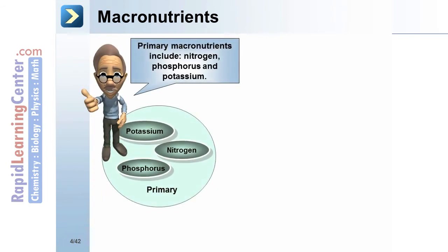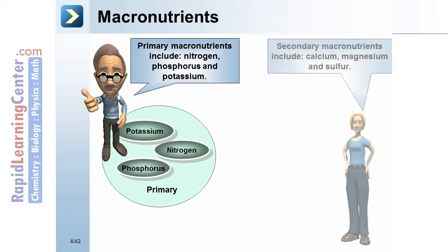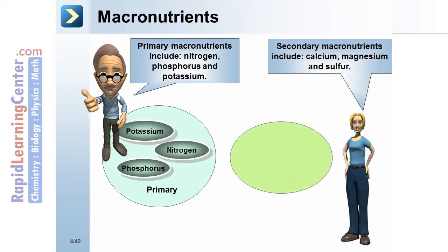Macronutrients. Primary macronutrients include nitrogen, phosphorus, and potassium. Secondary macronutrients include calcium, magnesium, and sulfur.